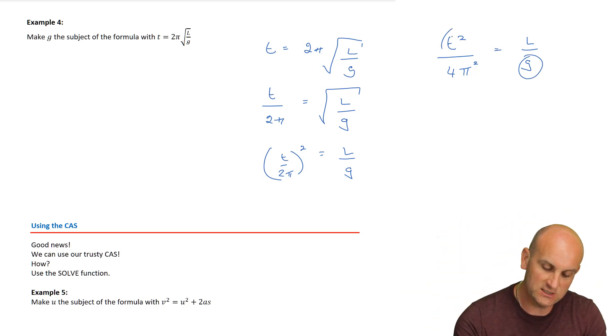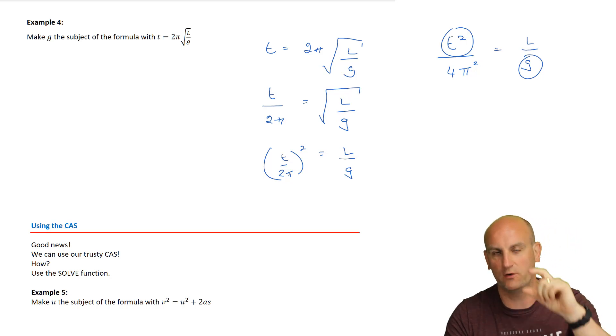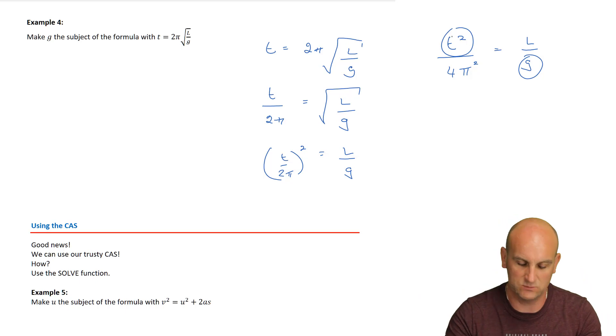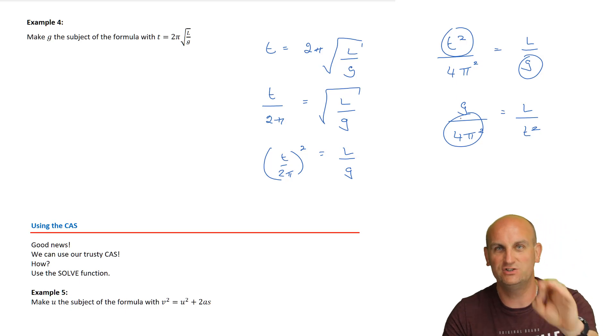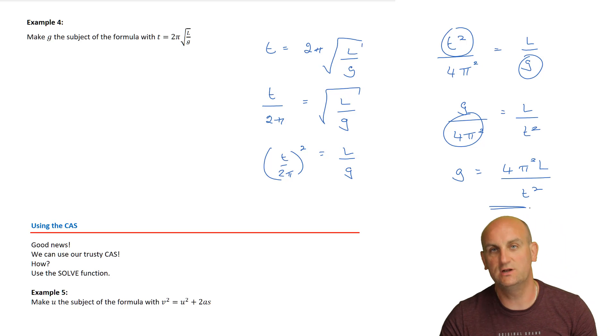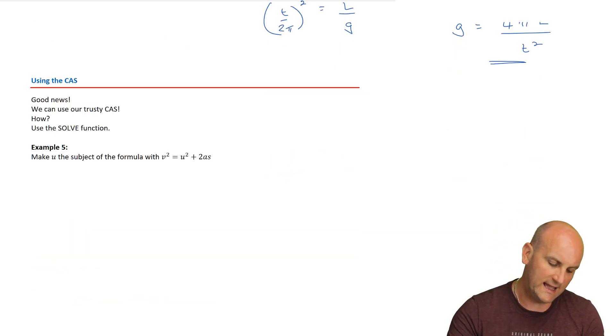So I'm going to change that G with that T squared. And it only works if I've got one fraction that equals a fraction. If I had a plus two or something else on it, that doesn't work. So I now get G on four pi squared is equal to L on T squared. And so I now need to get rid of my divide by four pi squared. I want that G on its own. So I'm going to multiply both sides by four pi squared, which gives me four pi squared L on T squared. And ladies and gentlemen, I have just transposed my formula.